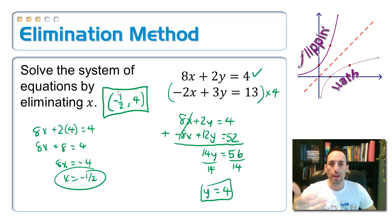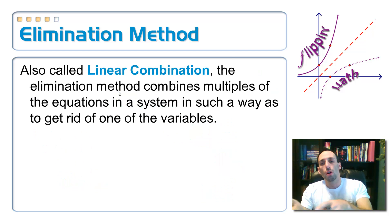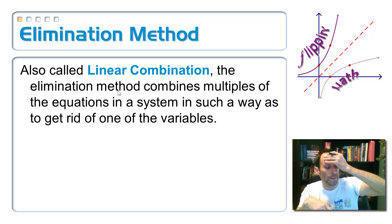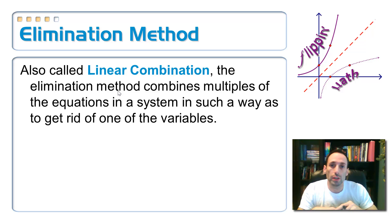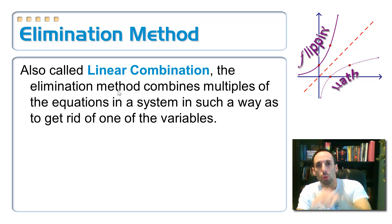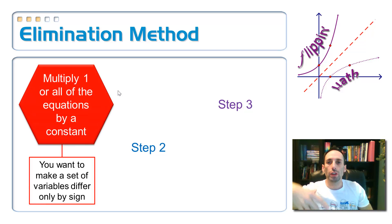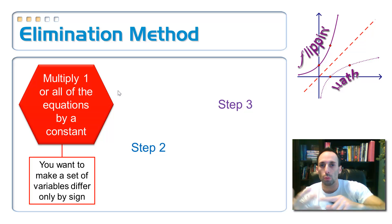Sometimes you have to multiply one or both of the equations by something in order to eliminate one of the variables — we also call this linear combination. If you're going to take a matrix class in college, usually part of a math degree or computer science degree, they call it linear combination. In this process, step 1: multiply one or all the equations by some constant to get rid of one of the variables. You want one coefficient to be positive and one to be negative — exact opposites, differing only by sign.